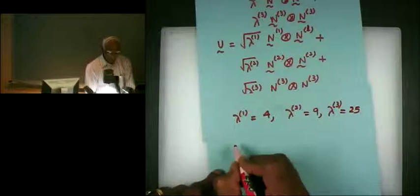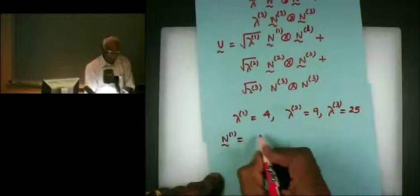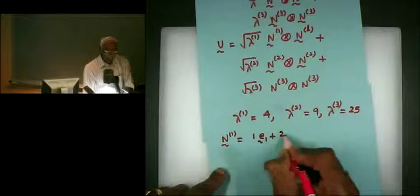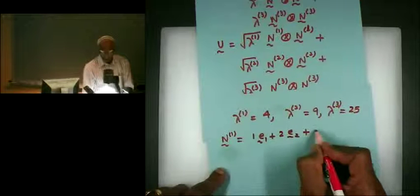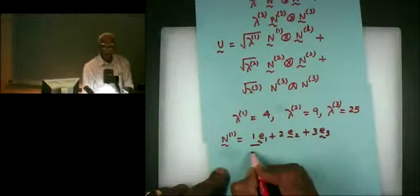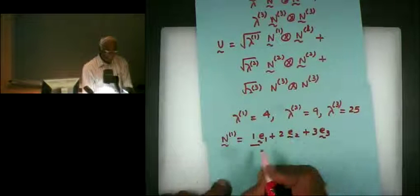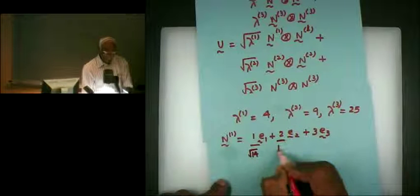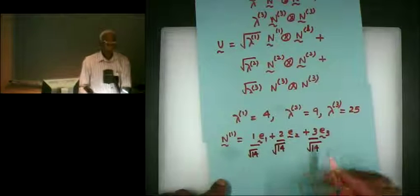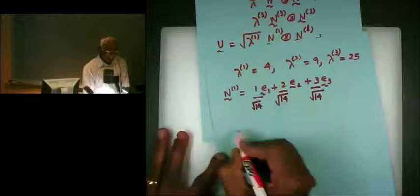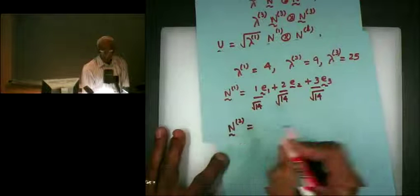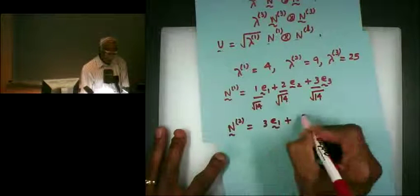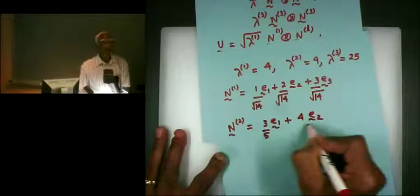Then N1 is E1 plus twice E2 plus 3 E3. Then I have to make it a unit vector. So that's square root of 9 plus 4 plus 1, which is 14. So let's also say N2 is 3E1 plus 4E2 over 5 — that's a unit vector. And N3 is just E1, because we're cooking up things, we may as well cook up a simple one.